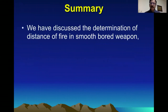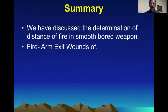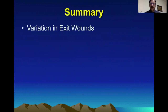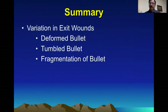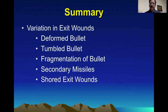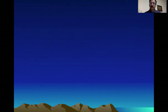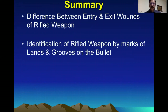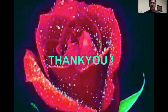In summary, this lecture discussed the smooth bore weapon distance determination, firearm exit wounds of both rifled and smooth bore weapons, and variations of the exit wound made by deformed bullets, tumbled bullets, fragmentation, or secondary missiles. We discussed shored exit wounds, the differences between entry and exit wounds, and identification of the rifle weapon by marks of the lands and grooves on the bullet, which confirms the identity of the weapon. Thank you very much. Take care and Allah bless.